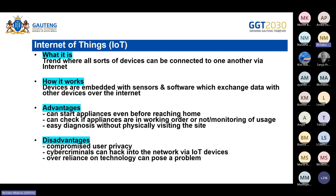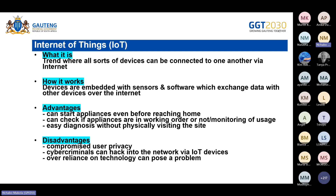Advantages of IoT: a person can start appliances even before they reach home, they can check if appliances are in working order, monitor the usage of appliances, and easily diagnose devices without physically being on site. Disadvantages include compromised user privacy, cyber criminals hacking into the network via IoT devices, and over-reliance on technology.